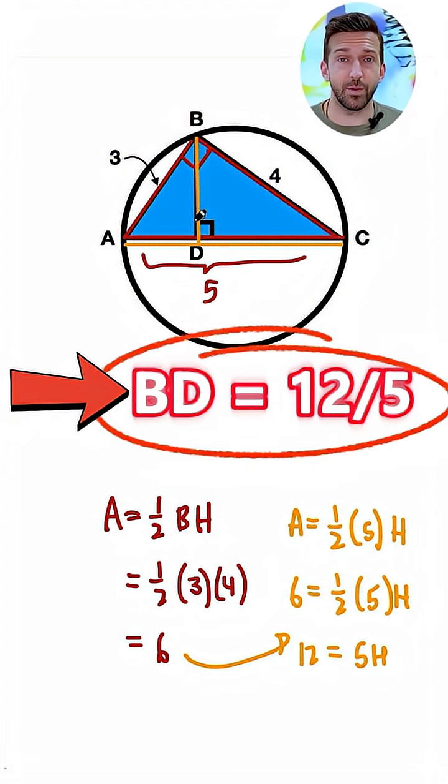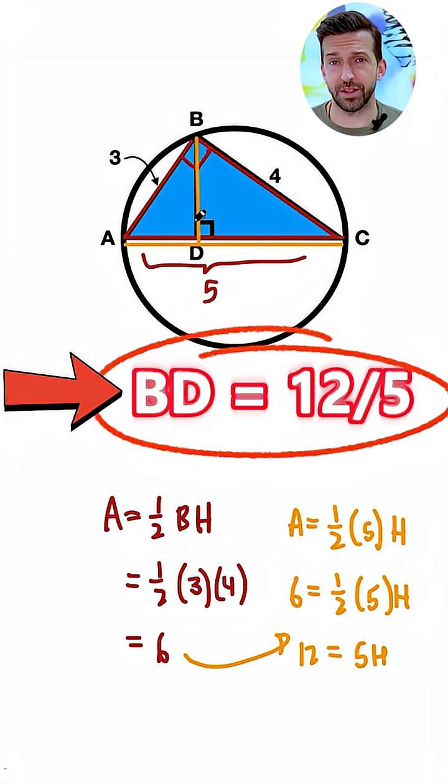And now we've solved the problem, and we never had to do a single proportion or remember any weird formulas from geometry. We just used the Pythagorean theorem and the area of the triangle.